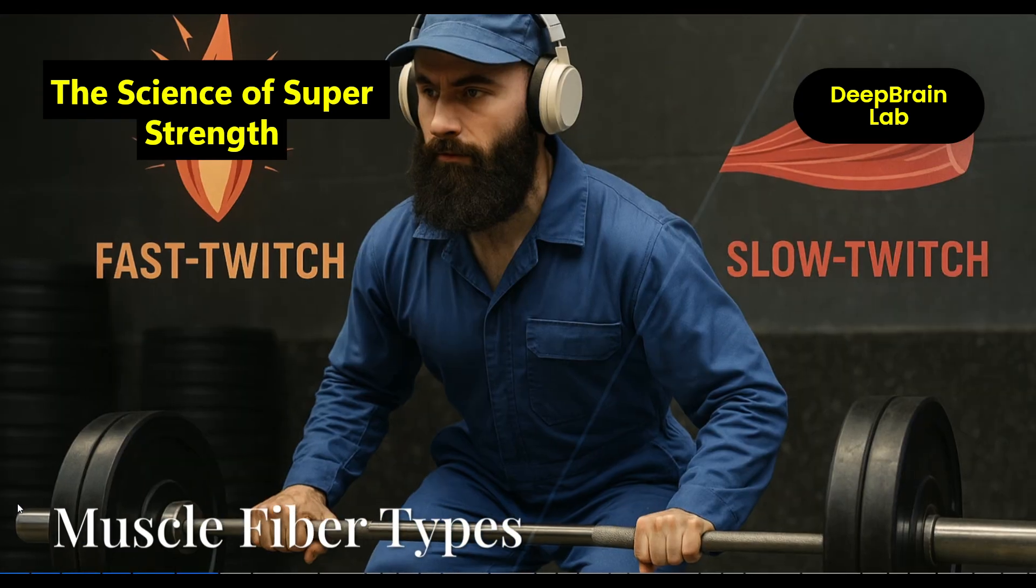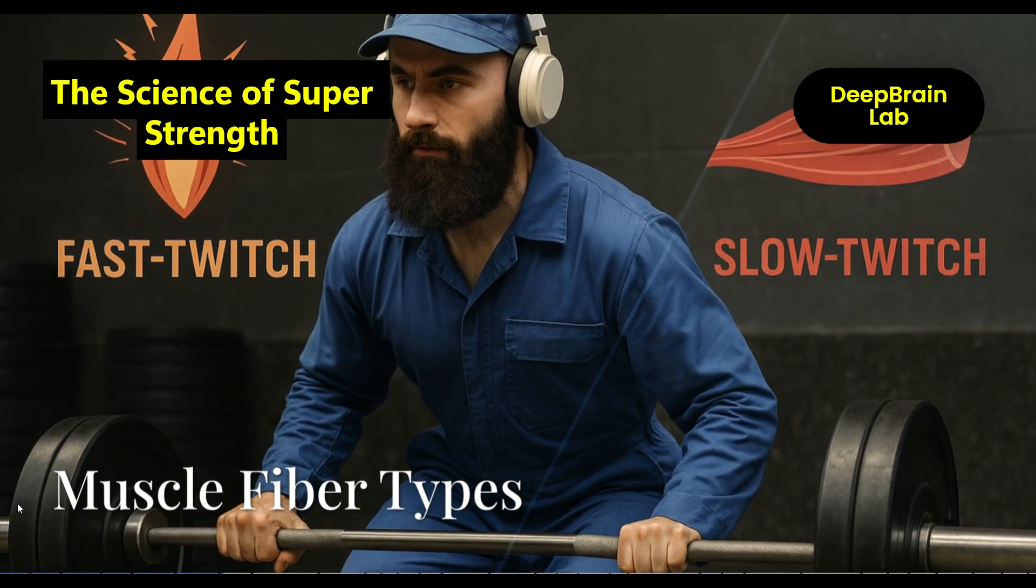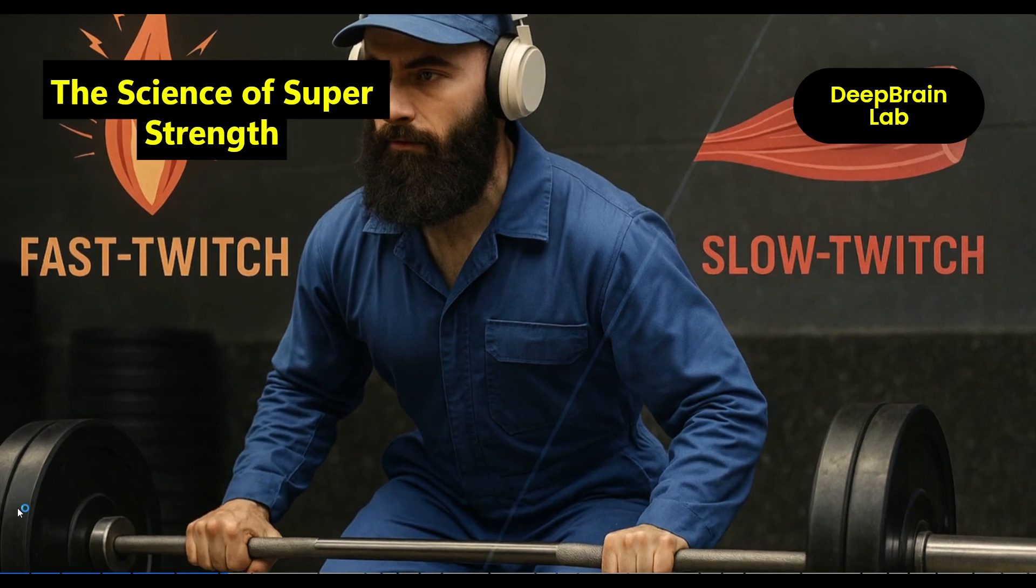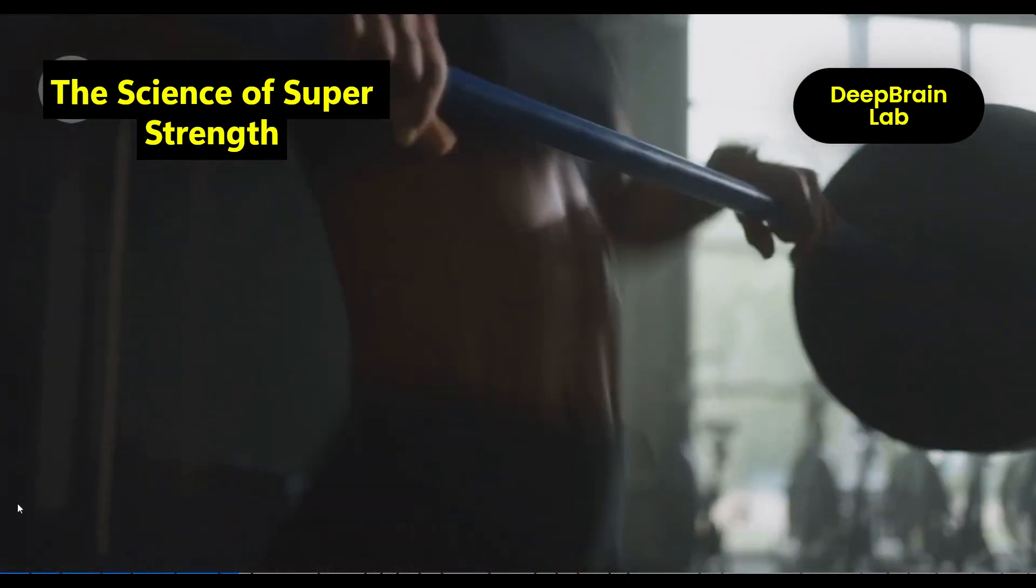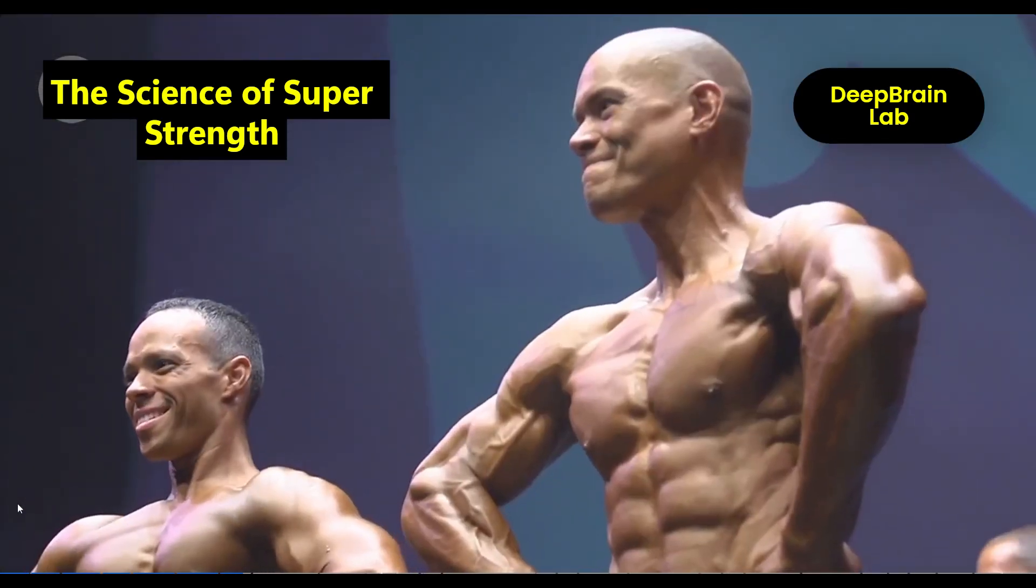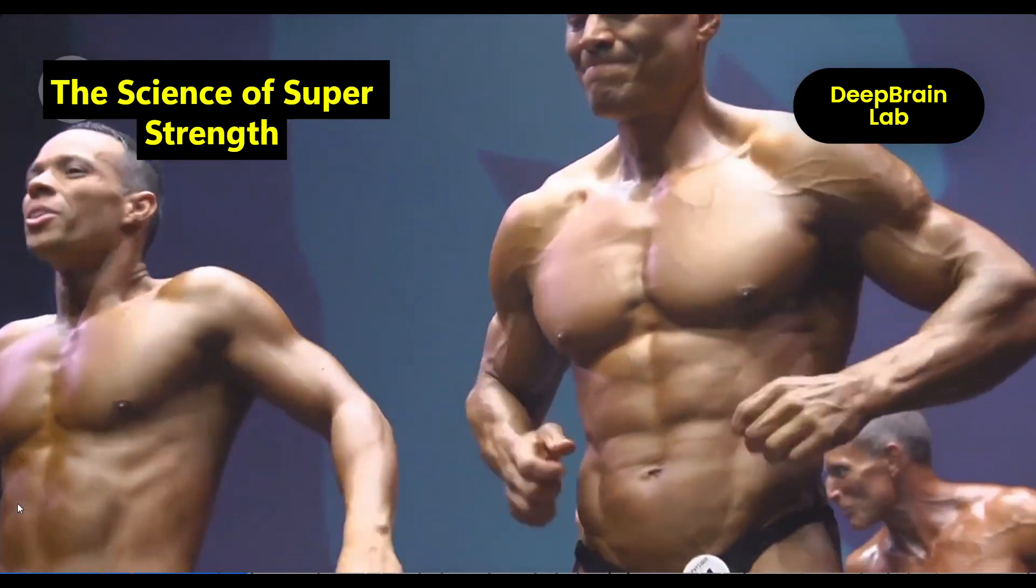Take muscle fibers, for instance. You've got slow-twitch fibers built for endurance, and fast-twitch fibers built for speed and power. The more fast-twitch fibers you're born with, the better your chances at explosive strength.